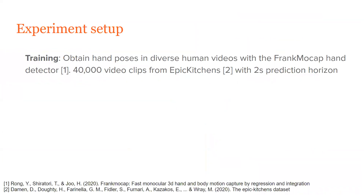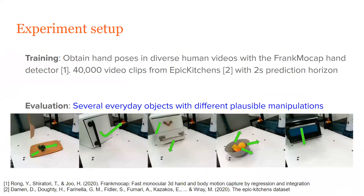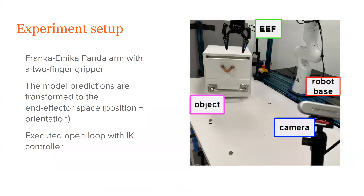For the experiments, we obtain hand poses in diverse human videos from the Epic Kitchens dataset with a two-second prediction horizon. The hand poses are extracted through the FrankMocap hand detector. For evaluation, we consider several everyday objects with different plausible manipulations. All of these objects are unseen by definition since we train the model only on human videos from the web. We use a Franka Panda arm and a camera in the scene, transforming model predictions to end-effector space and executing them in an open-loop manner.